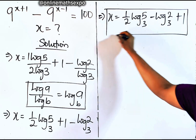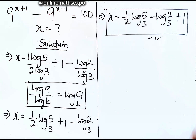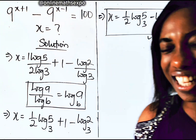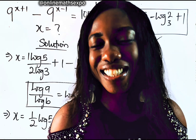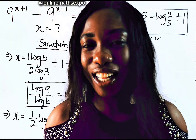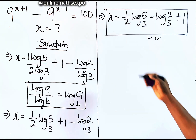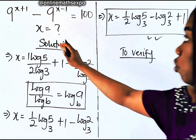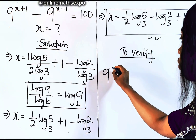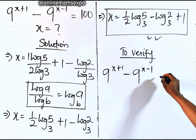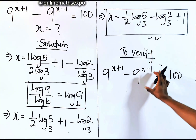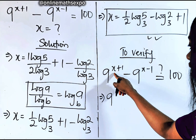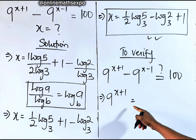Now we are going to verify. Let's plug this x value on the left side of the equation to see if it gives us back 100. Let's work with 9 to the power of x plus 1 first, then do 9 to the power of x minus 1, and then subtract.